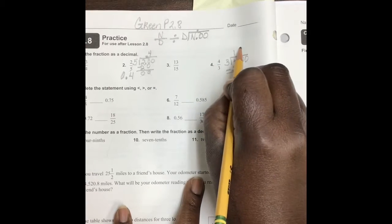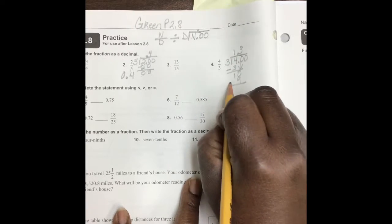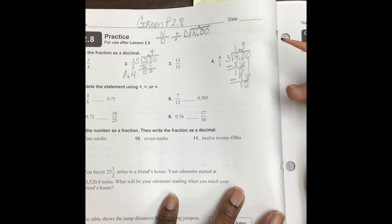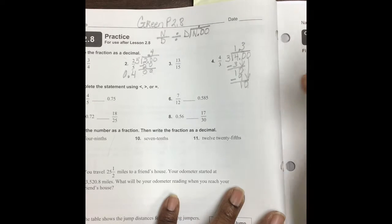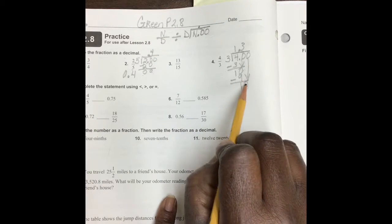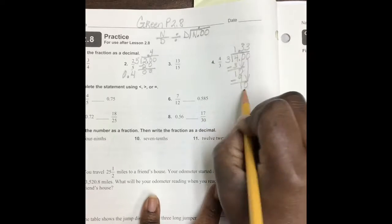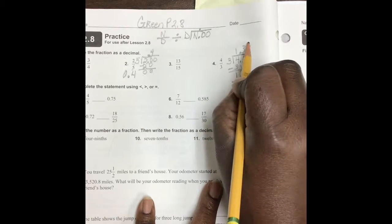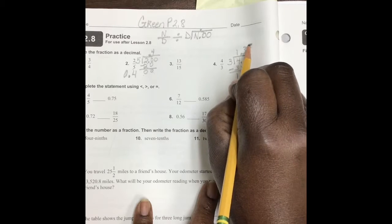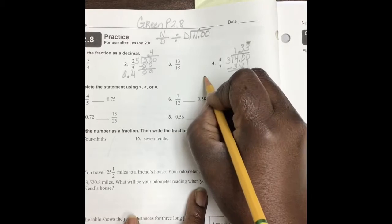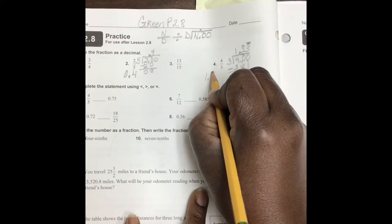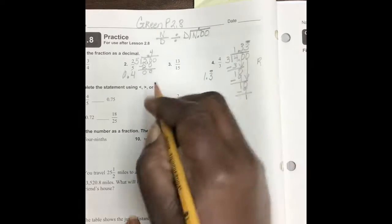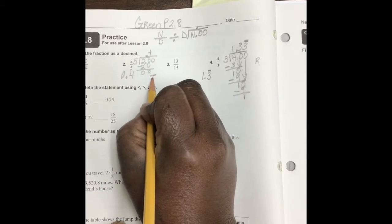How many threes are in 10? 3. 3 times 3 is 9. Subtract. Bring down our 0. Now we begin to realize that we have a repeat situation here. When we see our number begin to repeat itself, how many threes are in 10? 3. 9. Subtract. 1 is going to repeat. Therefore, we recognize that this is a repeating decimal. So, we put a bar over the repeating value. Our answer is 1.3 with the bar over our 3. So, number 4 is a repeat. And number 2 ends, which we call a terminating decimal.